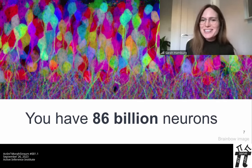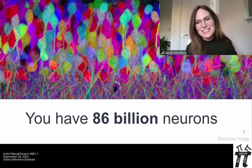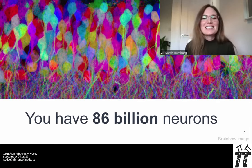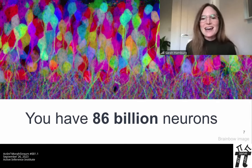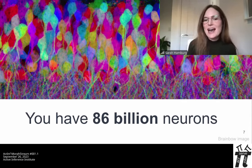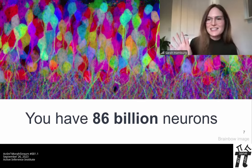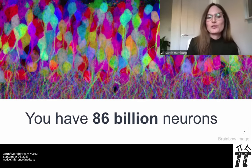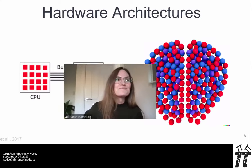Your brain is a highly energy-efficient, low-latency supercomputer that works just above room temperature off the equivalent of about four bananas a day. Next, I'm going to explain how key features of the brain are being implemented to catalyse our next generation of AI and technology through the field of neuromorphic computing.